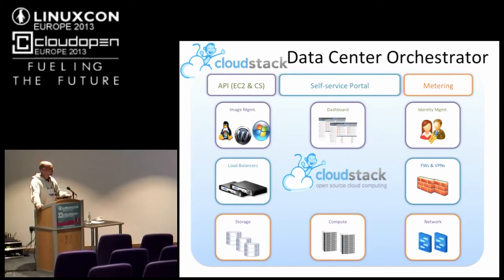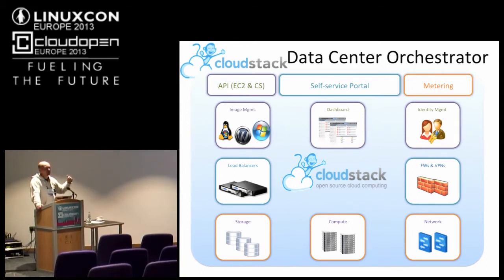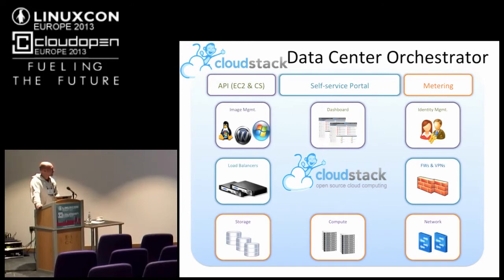So it's really a data center orchestrator. When you run the management server, you get services and features to manage virtual machines — hypervisor agnostic. You get a system to manage storage: not only the images, but also data volumes you can attach to your virtual machines. And you get network services. Those are really the three main characteristics of any IaaS: manage the compute, the storage, and the network.